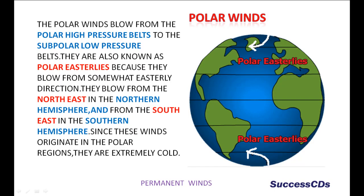The polar winds blow from the polar high pressure belts to the subpolar low pressure belts. They are also known as polar easterlies because they blow from a somewhat easterly direction. They blow from the north east in the northern hemisphere and from the south east in the southern hemisphere. Since these winds originate in the polar regions, they are extremely cold.